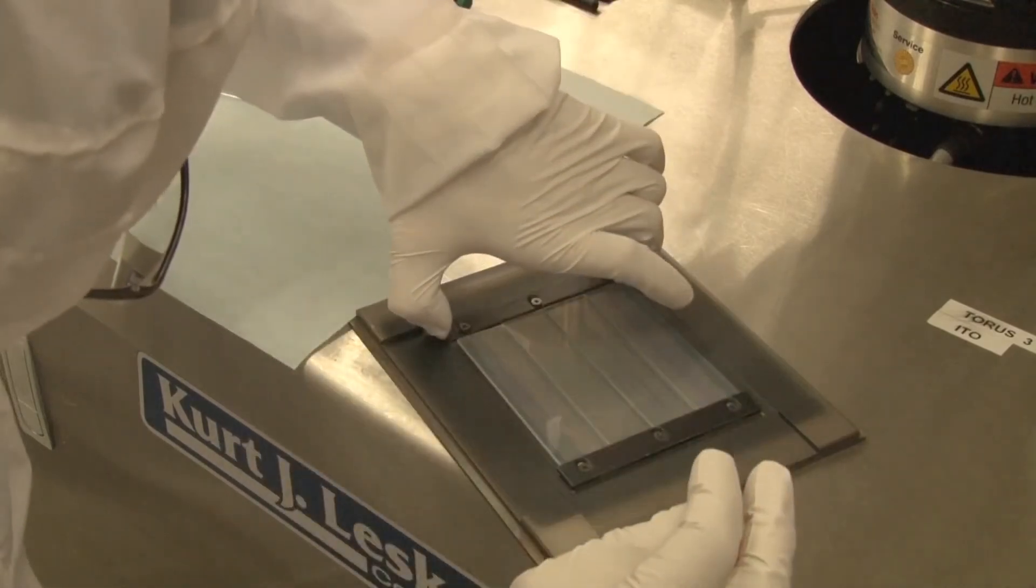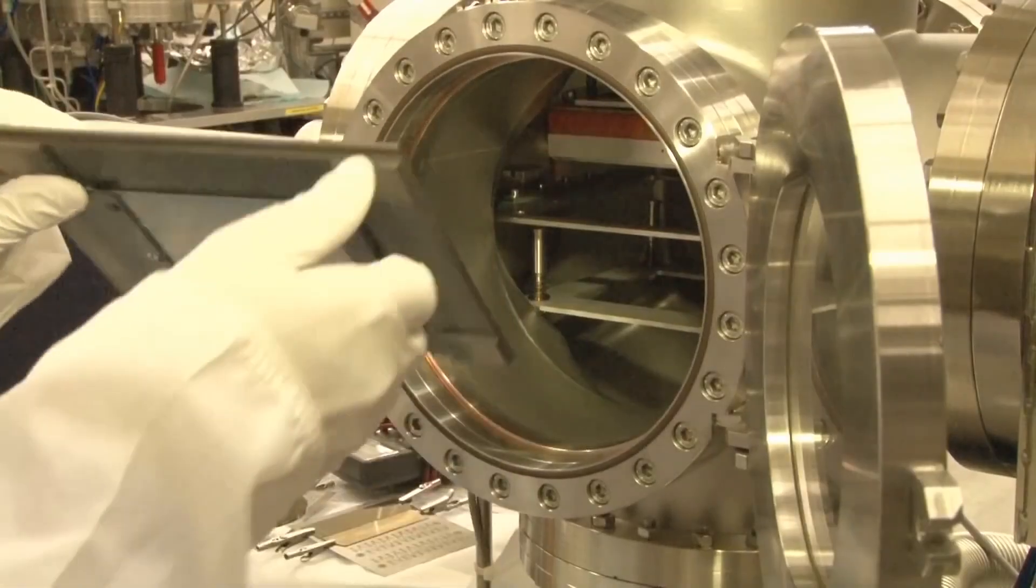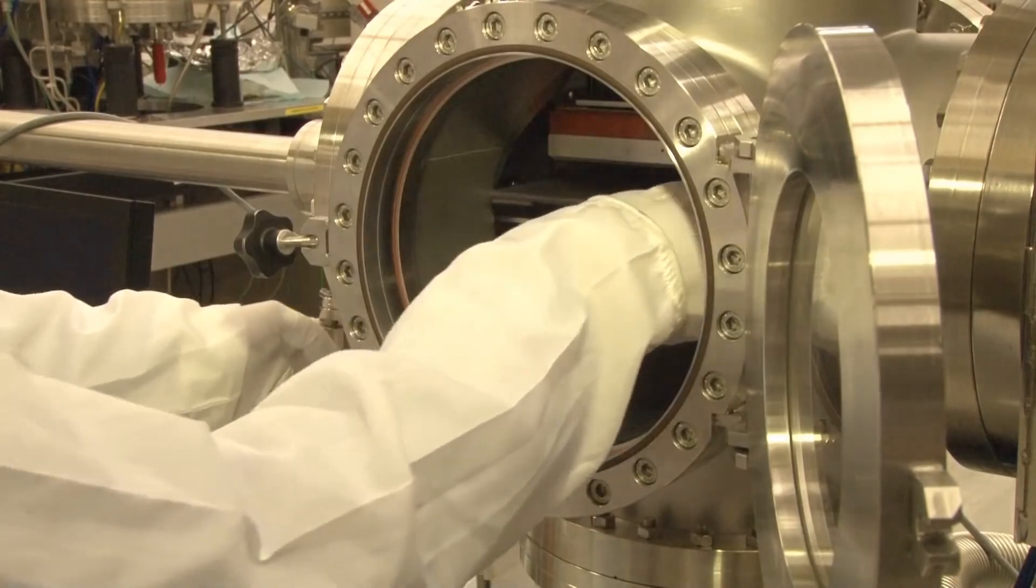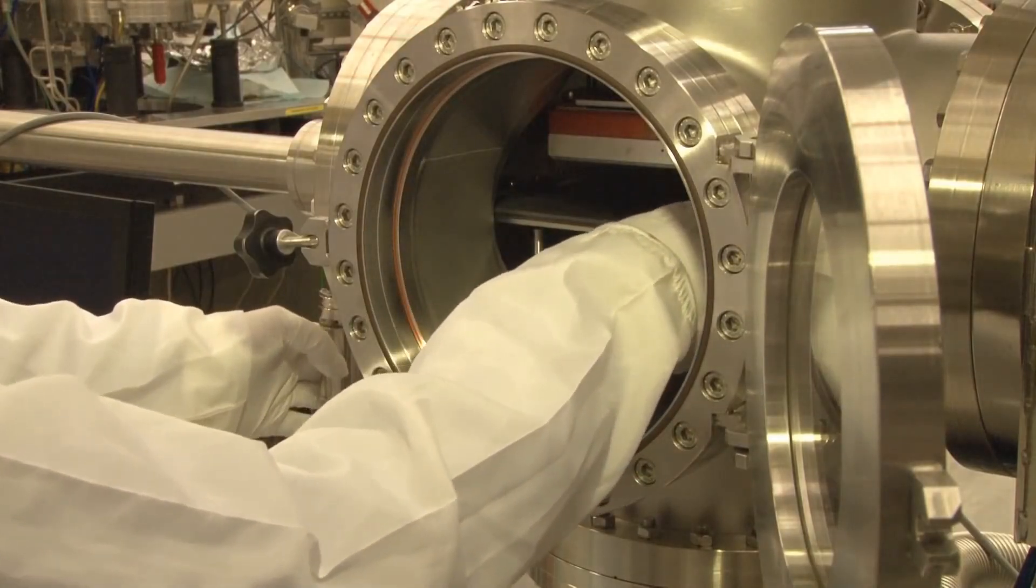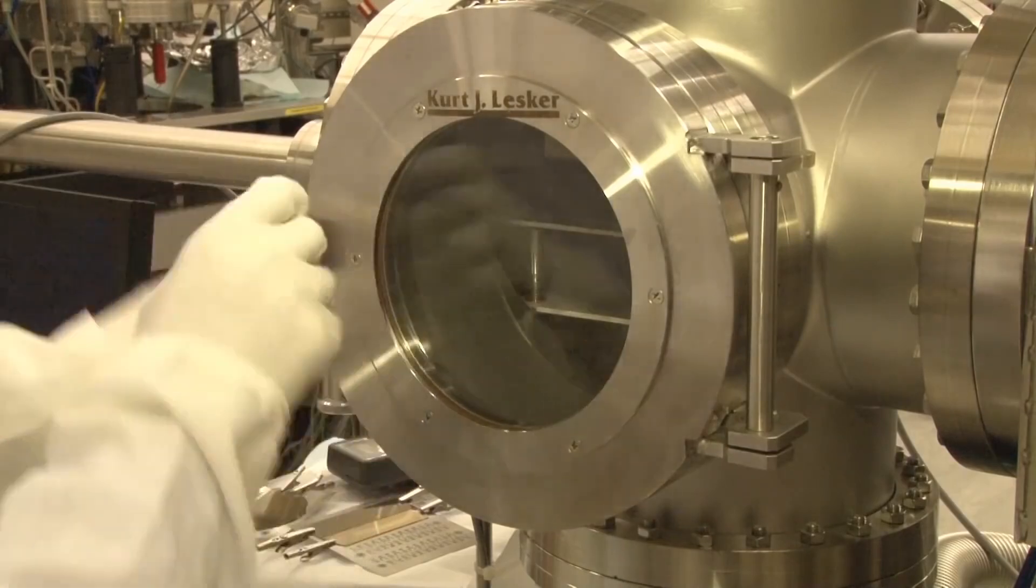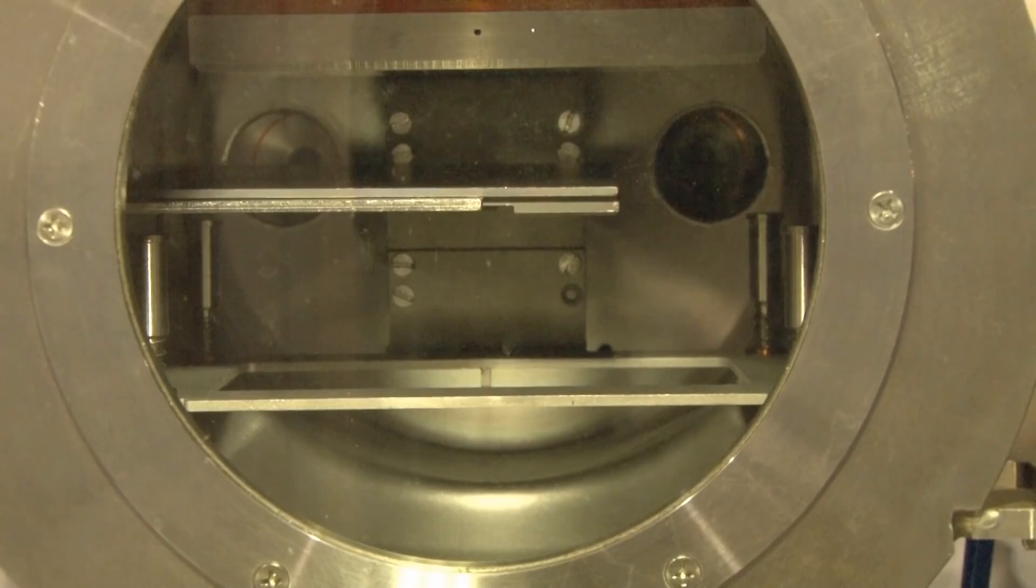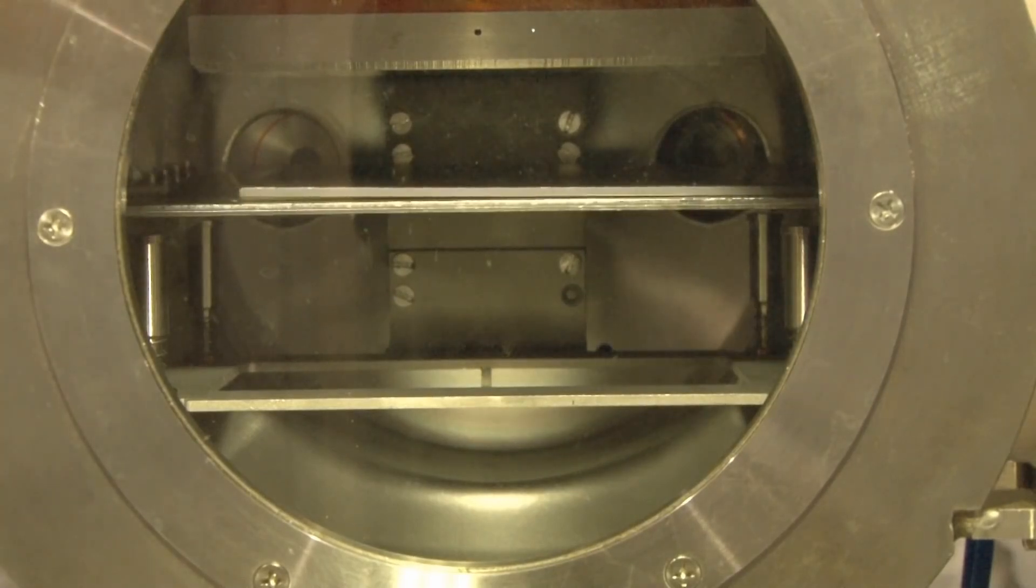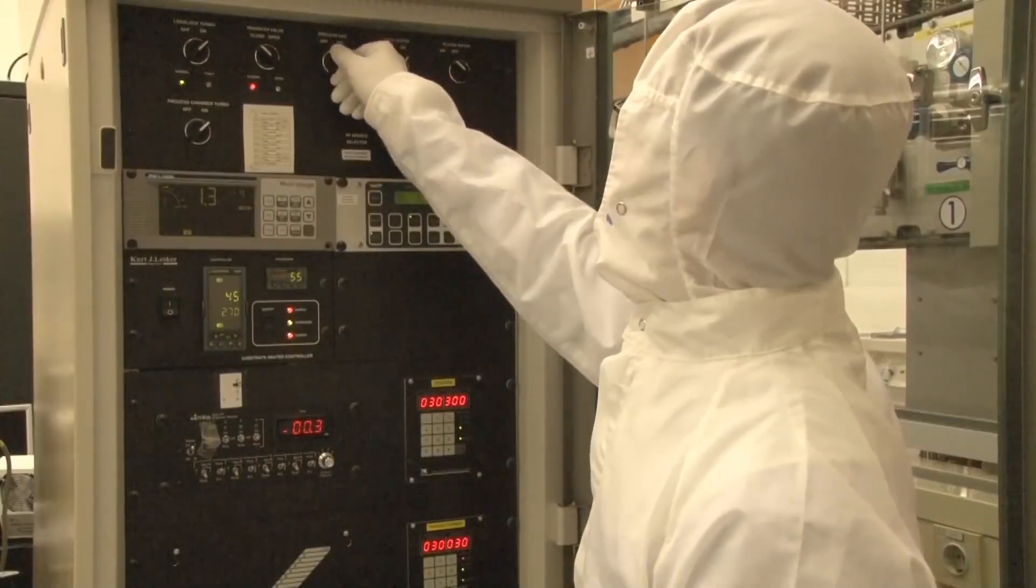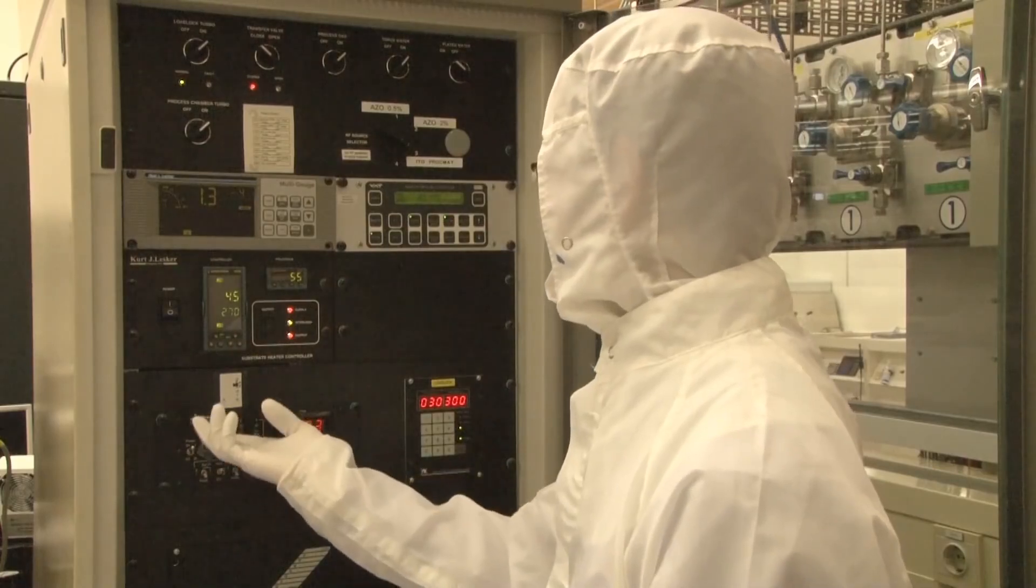In this movie, we deposit a thin zinc oxide layer on top of the Asahi substrate to protect the tin oxide from the next processing steps. The substrate is mounted on a sample holder and put into a load lock. A load lock is a chamber in which the substrate is brought under low pressure before it is moved into the processing chamber. This avoids the processing chamber to be contaminated with various unwelcome atoms and molecules present in ambient air.